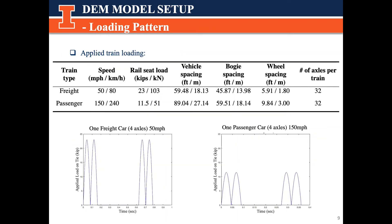In this study, we consider two train loadings: freight and passenger trains. The freight train travels at a speed of 50 miles per hour, while passenger trains have a speed of 150 miles per hour. Freight trains have 23 kips of axle load, but passenger trains have a lighter axle load at 11.5 kips. This table also shows their different layouts like vehicle spacing, bogie spacing, and wheel spacing. Both freight and passenger trains have 32 axles because we are assuming each train has 8 cars and each car has 4 axles. The bottom two figures show one freight and one passenger car with 4 axles applied in our models.